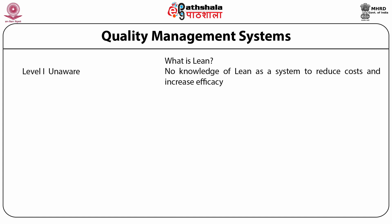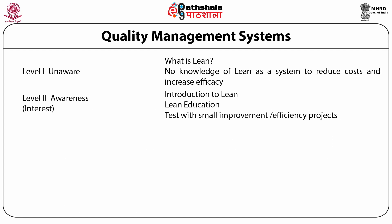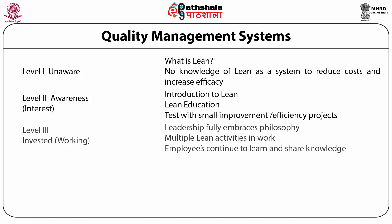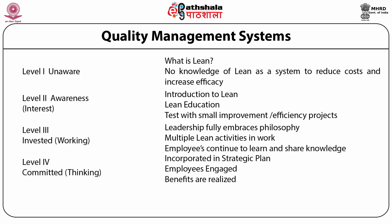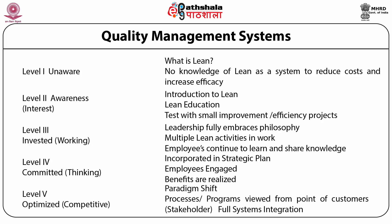What is lean? There are different levels of lean knowledge: from no knowledge of lean as a system of reduced cost and increased efficiency, to Level 1 introduction to lean, Level 2 awareness, Level 3 invested working, Level 4 commitment thinking, and Level 5 optimizing competitiveness.